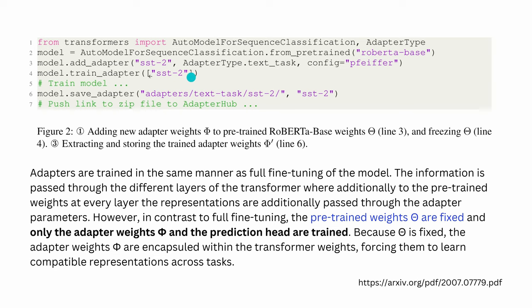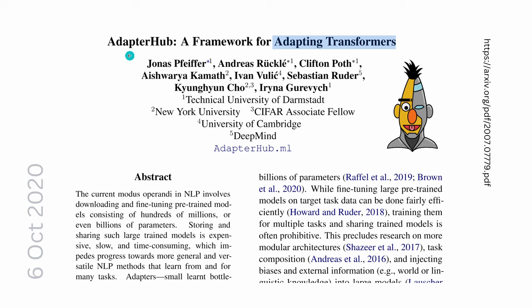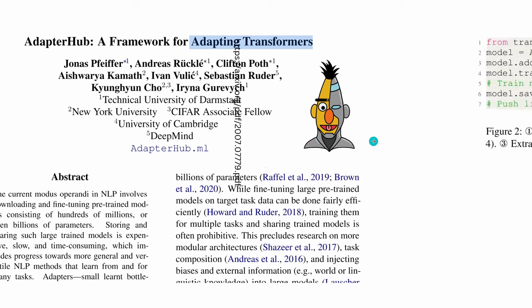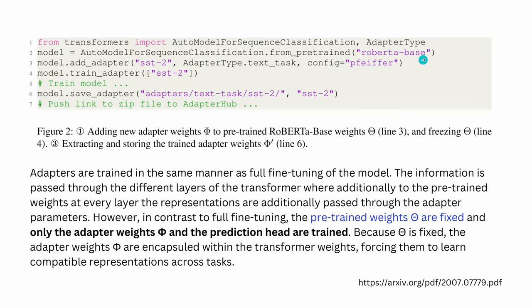After training, you can extract just the adapter weights — only the trained weights — and upload them to the Adapter Hub. For a particular model like Roberta-base, with a specific dataset such as SSD2, with a specific adapter configuration, this adapter for a text task is then available to everybody. Another person loads the same model, downloads the pre-trained adapter weights, and their inference task is now optimized for the downstream task that adapter was trained on. On this hub, adapters for many different datasets and tasks accumulated.